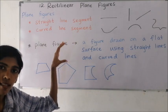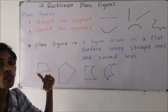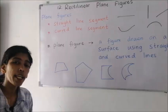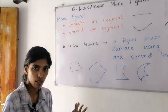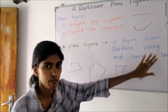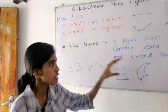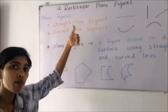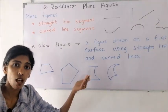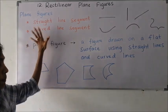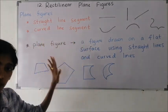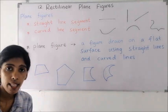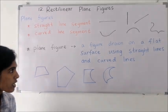With the help of these two types of line segments we can draw different types of figures. Now, how do we form plane figures? This white board is a flat surface. If we draw a figure on this flat surface with the help of curved line segments and straight line segments, such figures are called plane figures — because we draw them on a flat surface, using straight line segments and curved line segments.